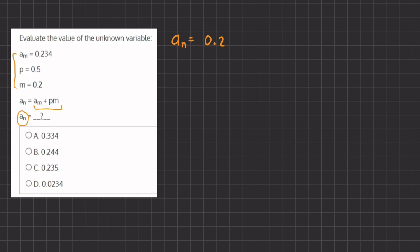which is 0.234, plus p, which is 0.5, times m, which is 0.2.